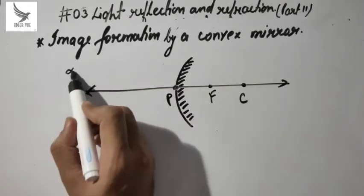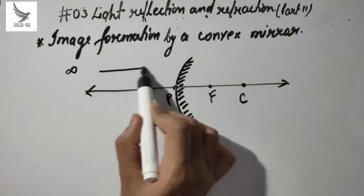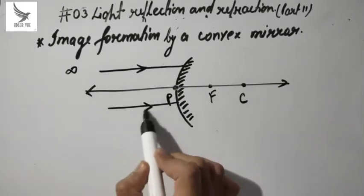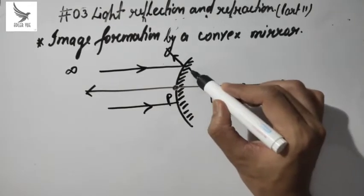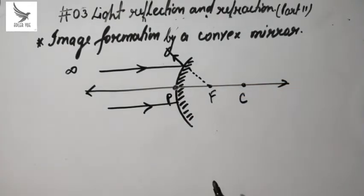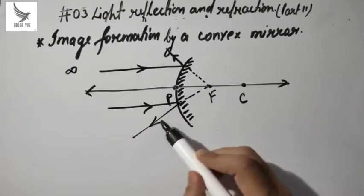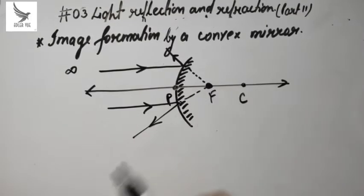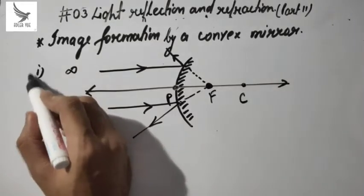Either we place the object at infinity — meaning very far away. When the object is at infinity, the rays come parallel, and after reflection they appear to diverge from the focus. By extending them, we form a virtual image at the focus. This was the first case: object at infinity.